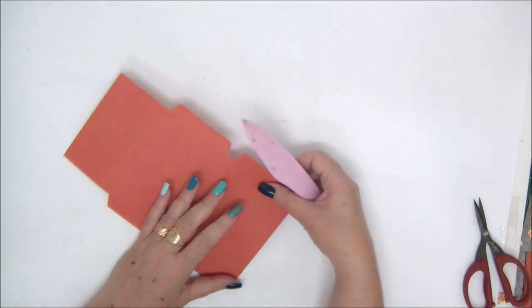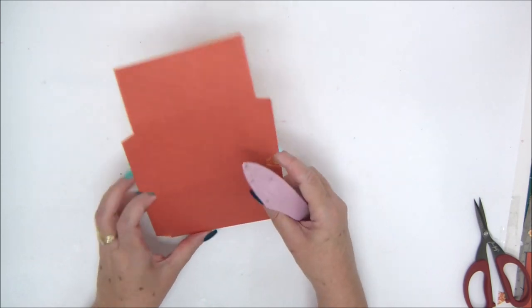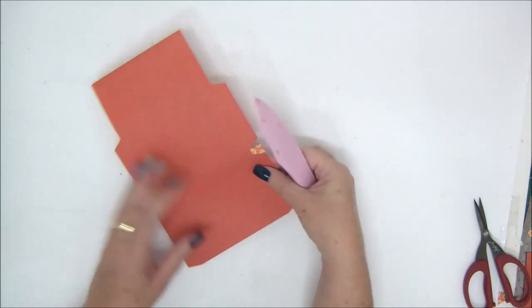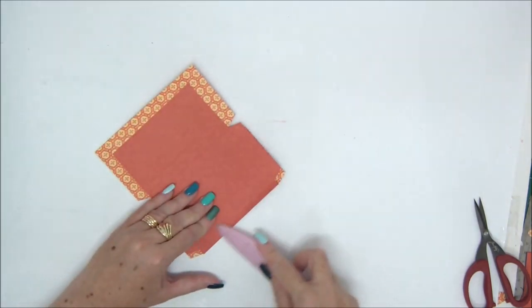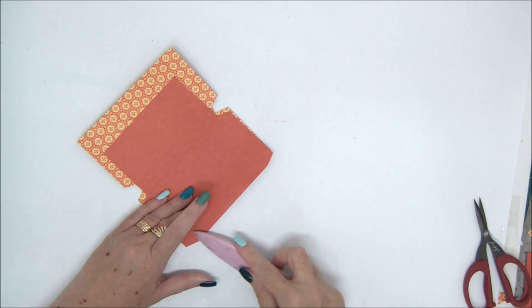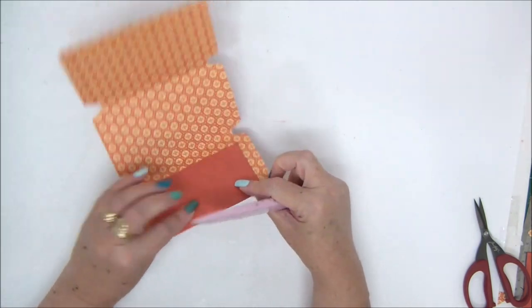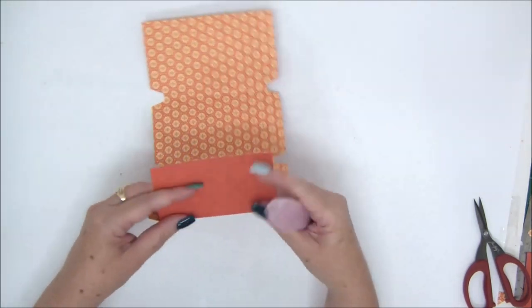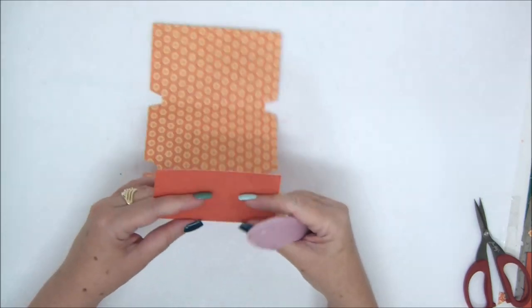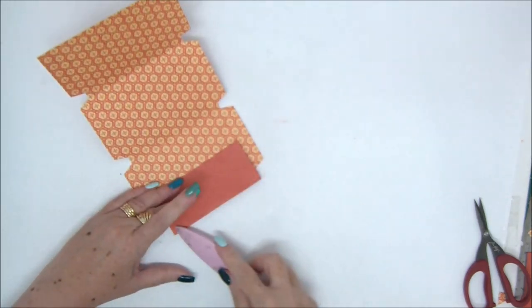So basically this is ready to be folded. Now we need to go and fold all the score lines. It's always good to use a bone folder. Like I said again, all the measurements are in the guide that you can download from the link under the video.